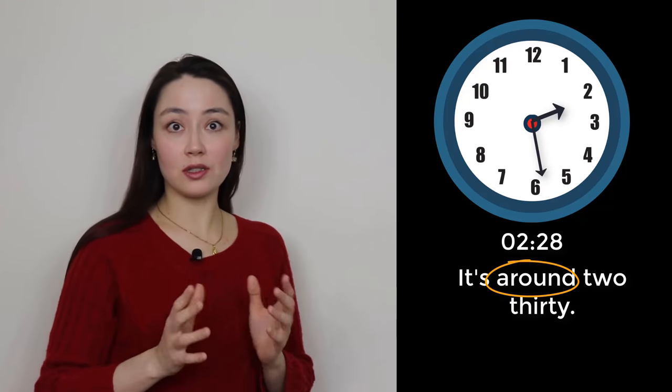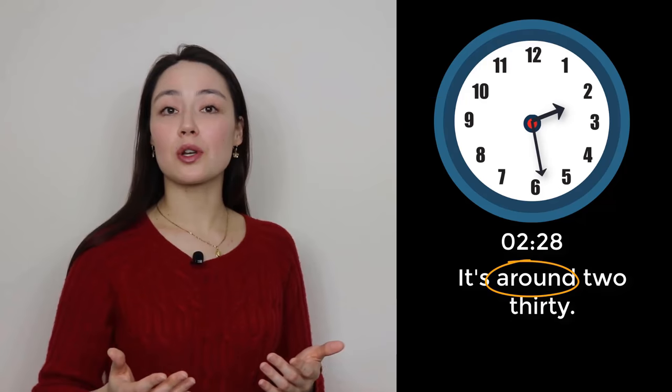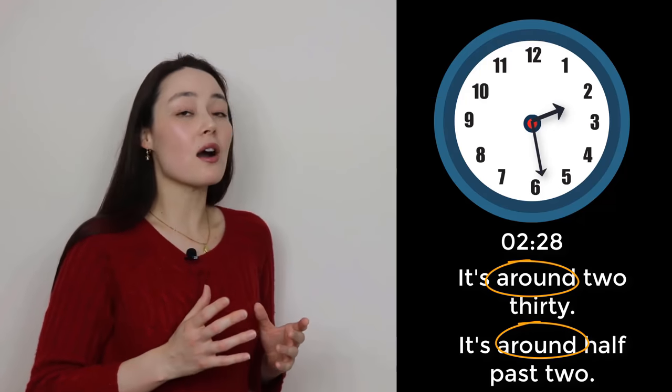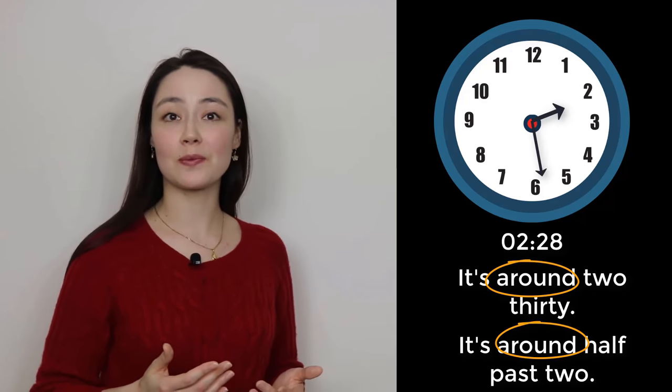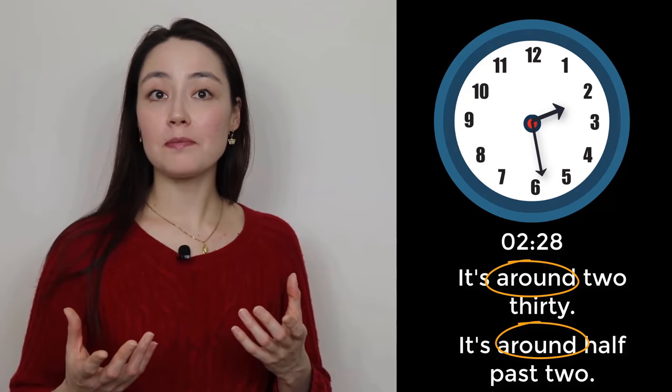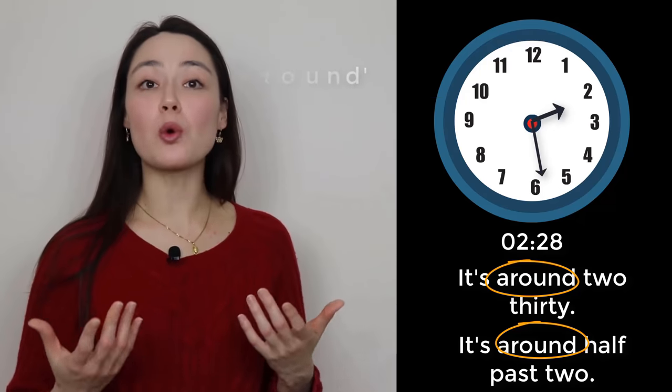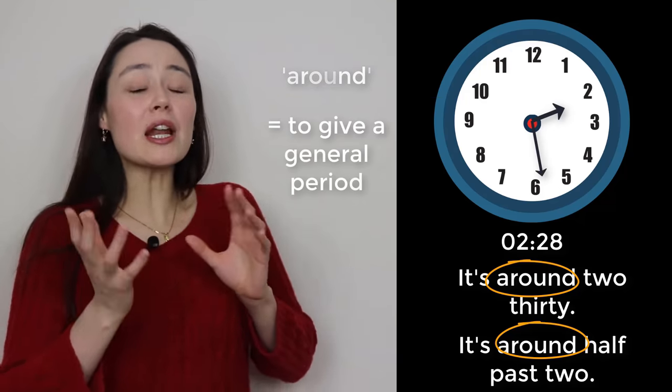Two twenty-eight. Is it really necessary to be so specific? Usually no. It's around two thirty. It's around half past two. Whenever we're telling time, you can always use around to give a general period.